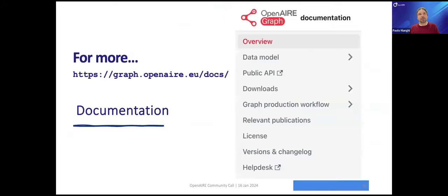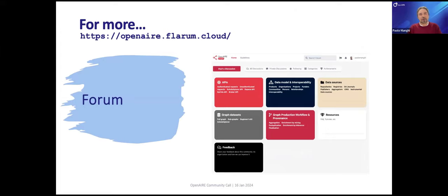We have documentation at graph.openaire.eu — information about the data model, how properties are exposed, the schemas we use, and the whole graph production workflows. You can also find all the scientific publications we have written about it. We're trying to be as transparent as possible. Please tell us if you have any questions through the forum we have lately provided, because we really care about interaction, improving our services, and getting feedback on our mistakes.